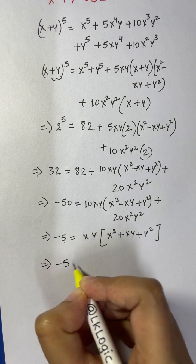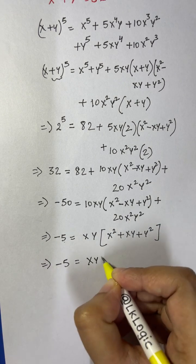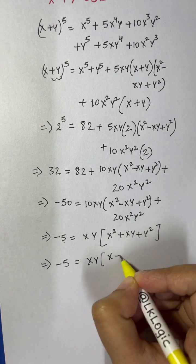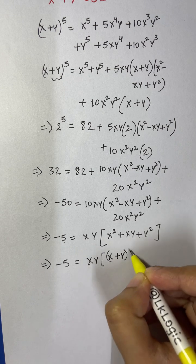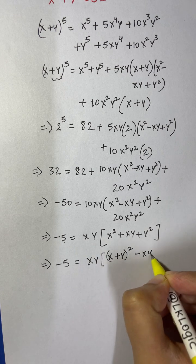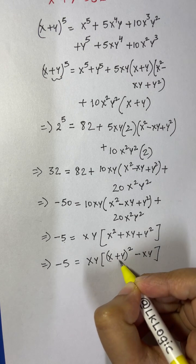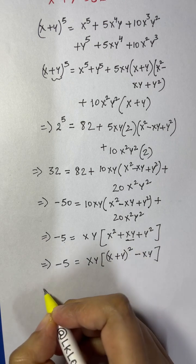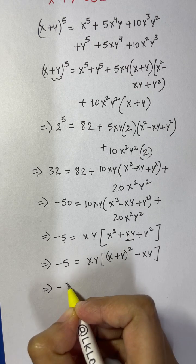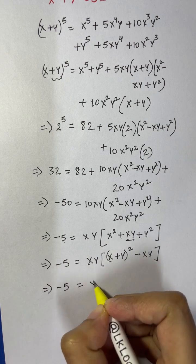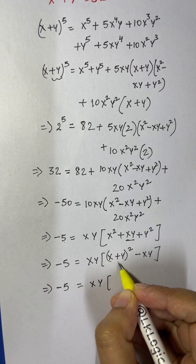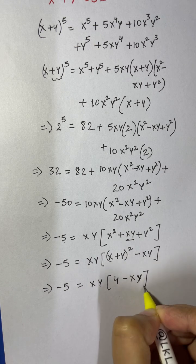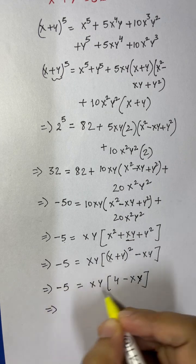So negative 5 equals xy times — and I can write this as — (x+y) whole squared minus xy. Since x plus y equals 2, I substitute: negative 5 equals xy times (4 minus xy).